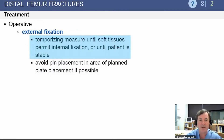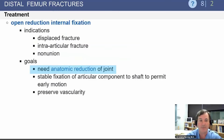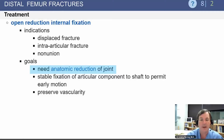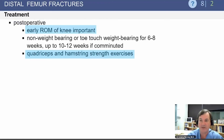Operative fixation may include an external fixator to temporize the injury until the soft tissues can heal, and then the patient can be treated with operative fixation — open reduction and internal fixation. The goal is anatomic reduction of the joint and fixation of the articular component to the shaft so that early motion can occur. It is important during the approach to preserve vascularity.